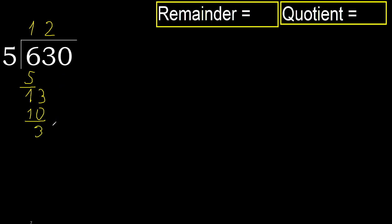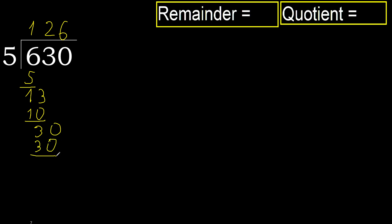Next: 30. 5 multiplied by 6 is 30 — it is not greater, ok. Subtract: 30 minus 30 is 0.